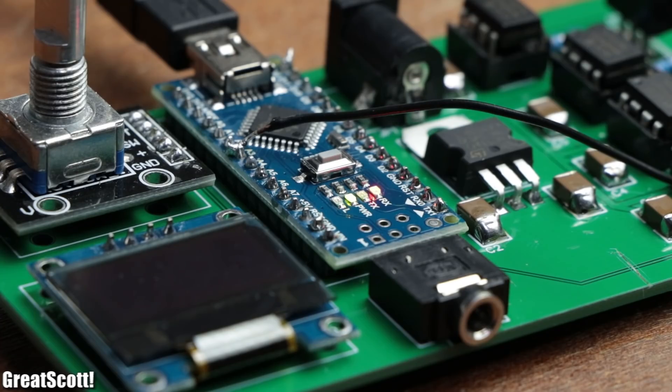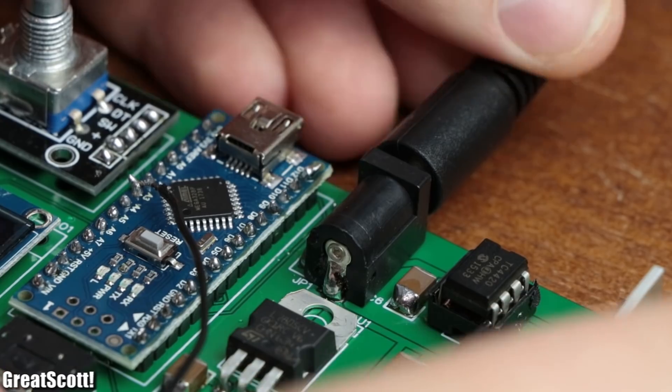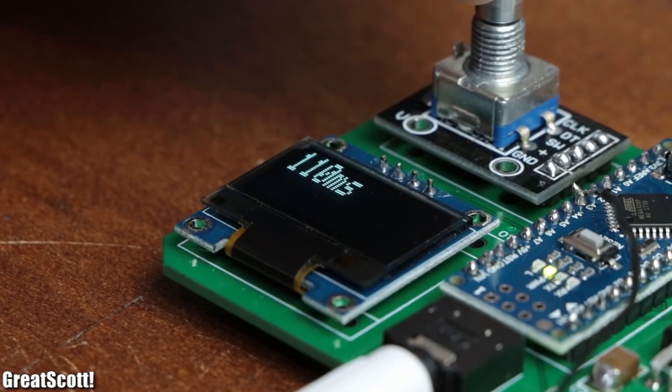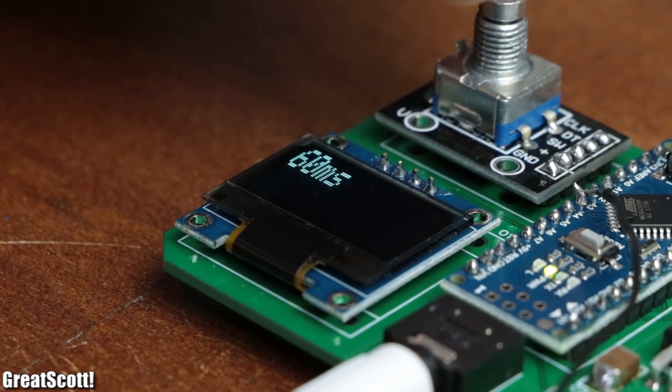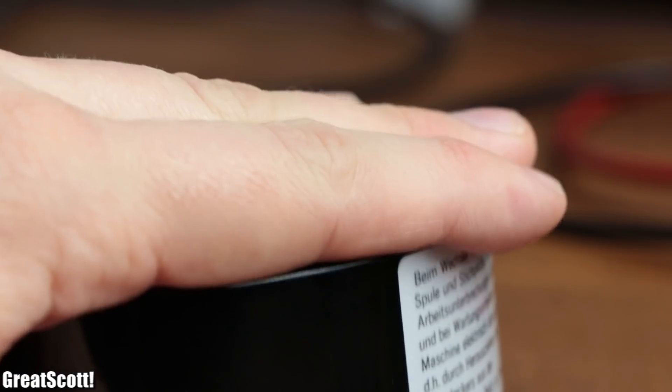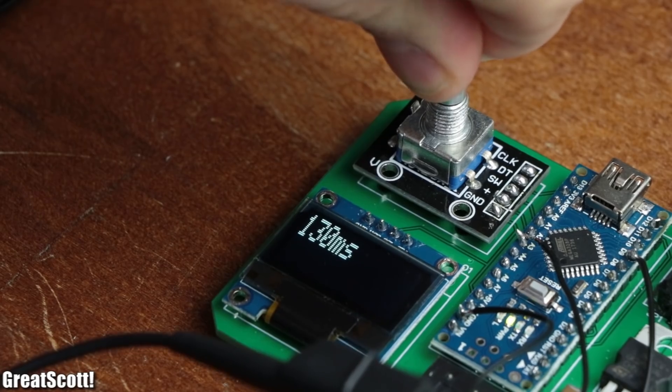So after uploading the code, connecting the capacitor bank and a DC voltage of 15 volts to the circuit, it was time for testing. And as you can see, the rotary encoder control works, charging the capacitors is possible, and even the pedal switch created a precise pulse according to what we have set with the rotary encoder.